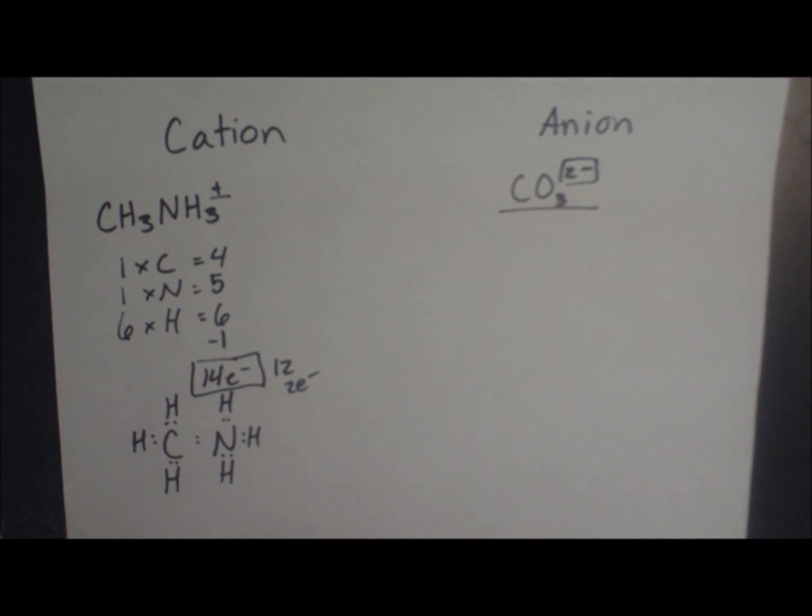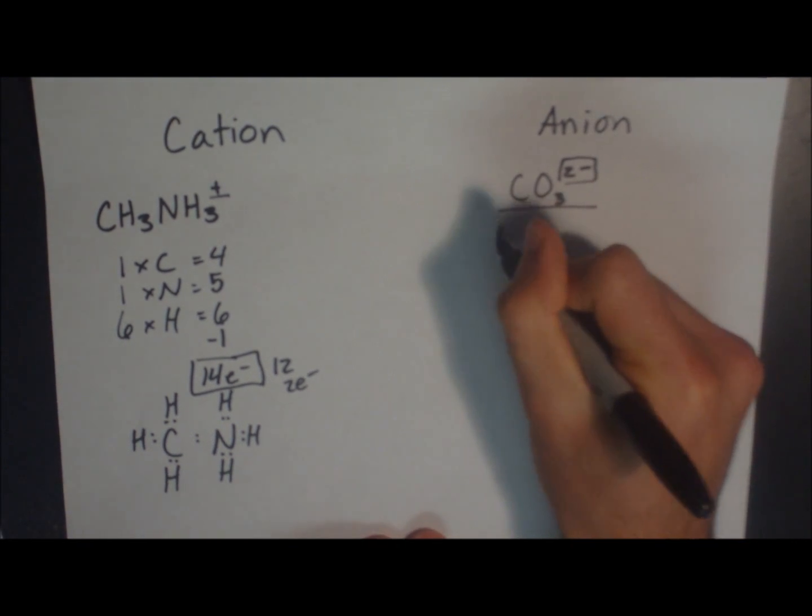Well, a negative 2 charge means that there's 2 extra electrons in this molecule. And that makes sense, because electrons are negatively charged. So a negatively 2 charged molecule will have 2 extra electrons. And that just factors in when we do our math.